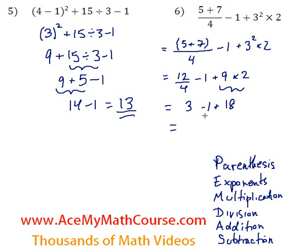Then we can do addition and subtraction. So 3 minus 1 is 2, plus 18 is 20. That's it. Note that I did the subtraction first then the addition, but that would give us the same thing.